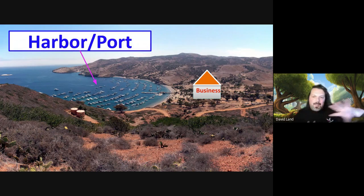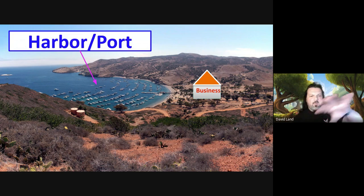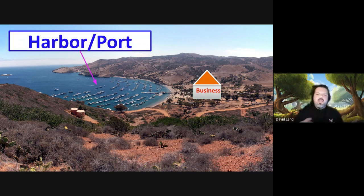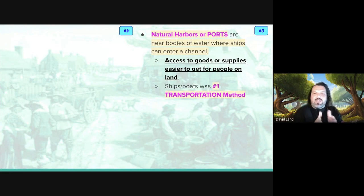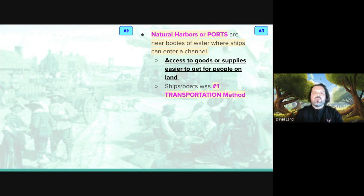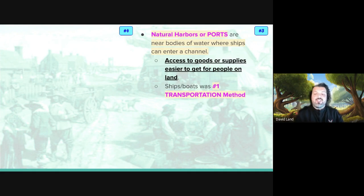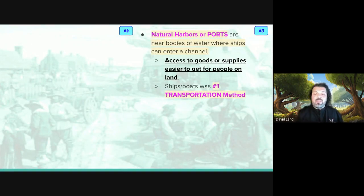Before we get into the tour, let's talk about a harbor and a port because this pops up a lot in the 13 colonies. Observe the picture — you see the ocean, the land on one side, and lots of ships parked there. In a harbor, a body of water allows a ship to enter a channel — a pathway where access to goods or supplies can get to people on land easier.